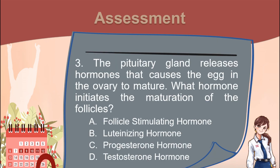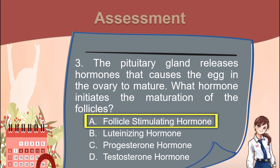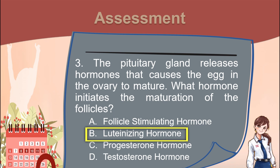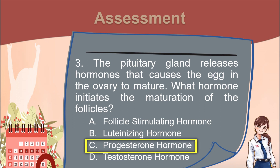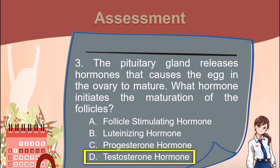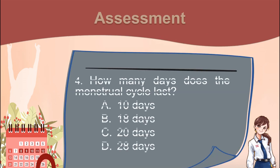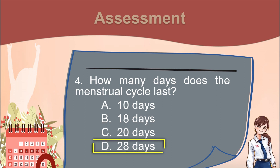Number 3. The pituitary gland releases hormones that cause the egg in the ovary to mature. What hormone initiates the maturation of the follicles? A. Follicle-stimulating hormone. B. Luteinizing hormone. C. Progesterone hormone. D. Testosterone hormone. Number 4. How many days does the menstrual cycle last? A. 10 days. B. 18 days. C. 20 days. D. 28 days.